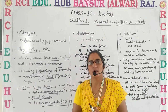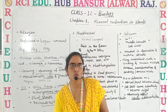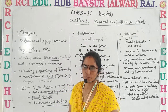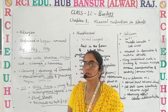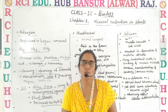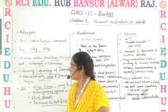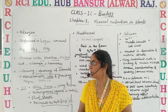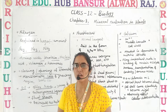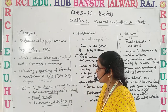Nitrogen is one of the elements required in the largest amount by plants for their growth. It is mainly absorbed by the plants in the form of nitrites, nitrates, and ammonia. It is the main constituent of amino acids, proteins, nucleic acids, vitamins, and hormones, so overall it is required in large amounts.